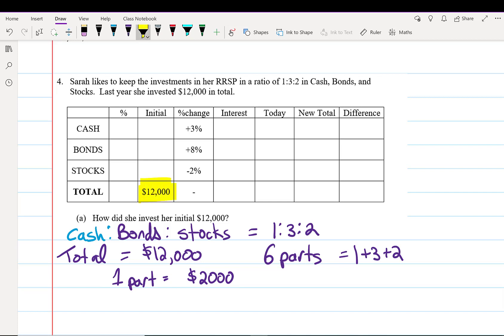I'm going to write our initial percentage as a fraction instead of a percent. Cash is going to be 1/6, bonds are going to be 3/6, and stocks are going to be 2/6. When we add those together they add up to 6/6 or 100%.